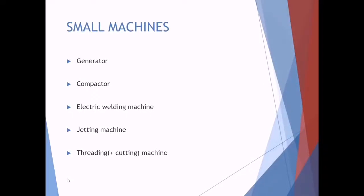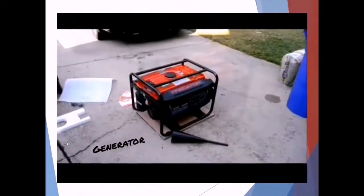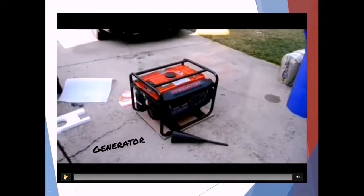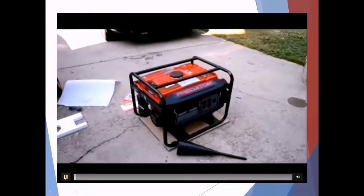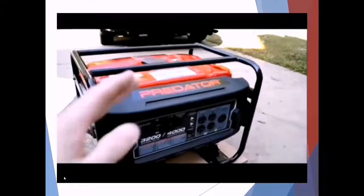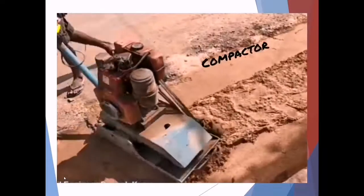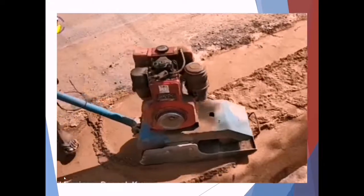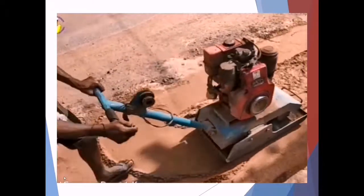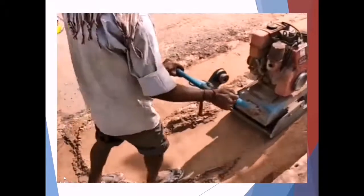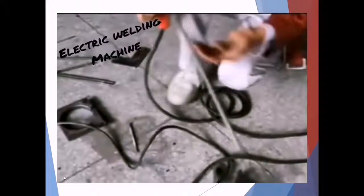Let's look at other small machines. First we have a generator — a machine which produces electricity, which is very useful on sites where the electricity has not been connected yet. A compactor in plumbing is specifically used to make the ground more solid before laying drain pipes.